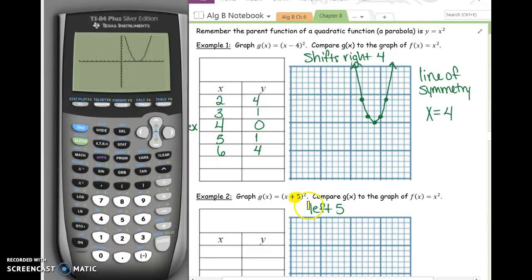It's going to move left 5. So anything that happens inside those parentheses is backwards. So if it says plus 5, it's actually going to move to the left 5.